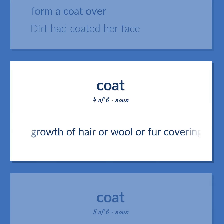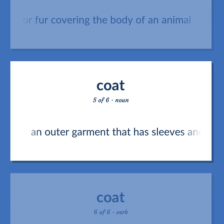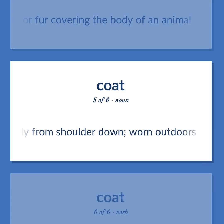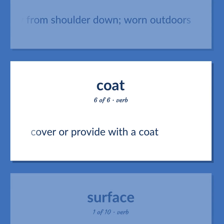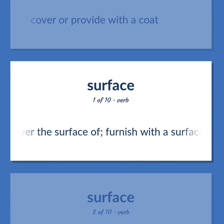Coat (noun): Growth of hair, wool, or fur covering the body of an animal. An outer garment that has sleeves and covers the body from shoulder down, worn outdoors. Also: to cover or provide with a coat; put a coat on; cover the surface of; furnish with a surface.